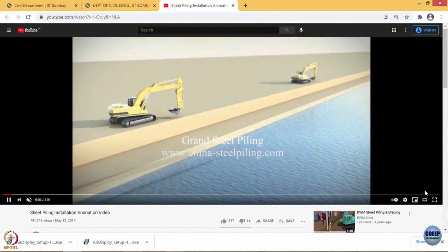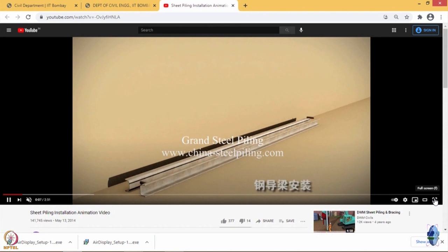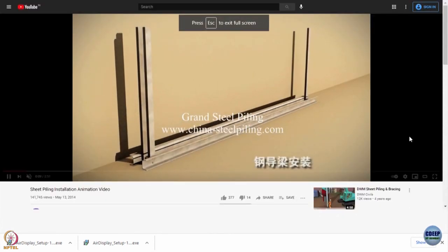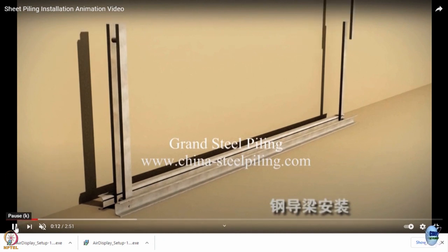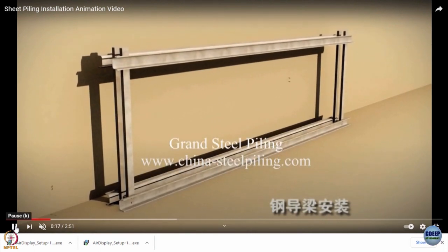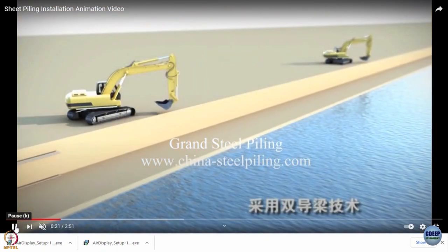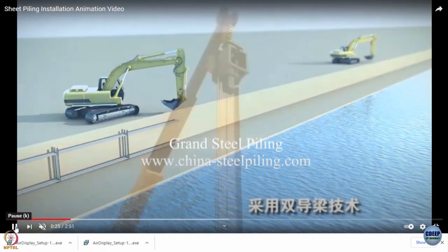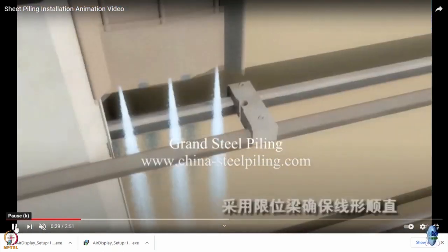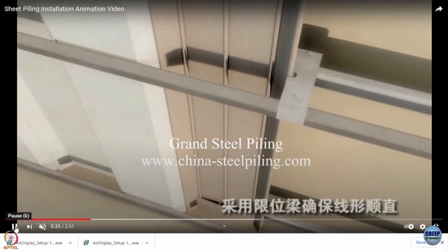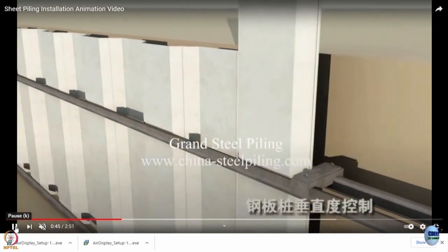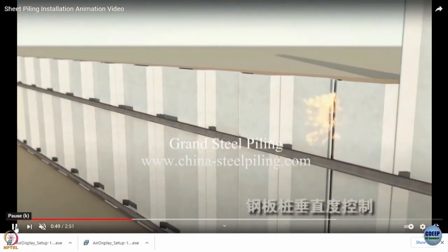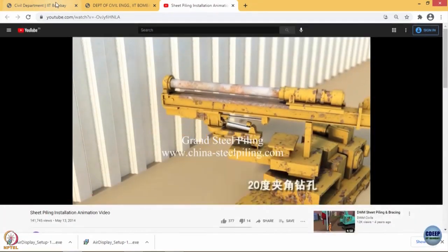This is a good example of waterfront structures and how they are being made by using sheet piles. This is a very specialized construction. First the form work has been done and then followed by insertion of the sheet pile for maintaining the alignment. I think this is good enough to give you an idea about how the sheet piles are done.